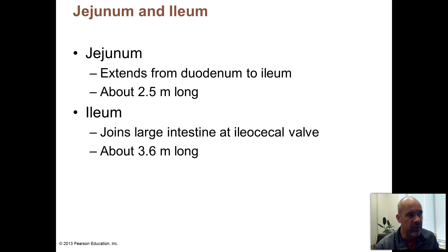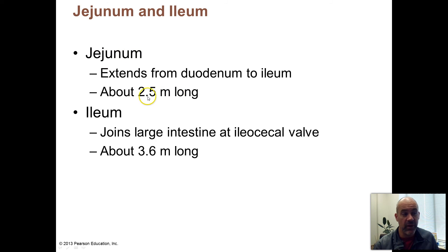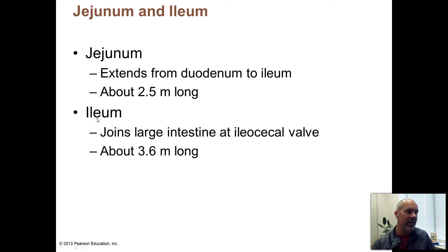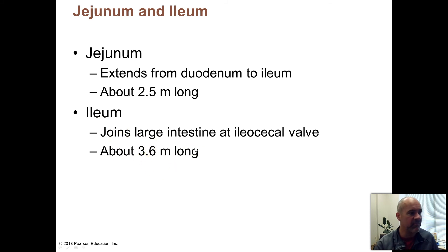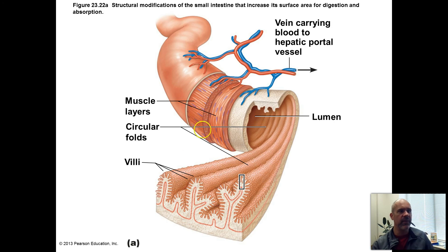Moving on from the duodenum, the next stretch of the small intestine is called the jejunum, which is about 2.5 meters — roughly 8 feet — long. The third stretch is called the ilium, spelled with an E and not an I. Ilium with an I refers to the main portions of your pelvic bones, so keep that spelling difference in mind. The ilium is about 3.6 meters — about 11 feet — long, so it obviously has to be wadded up pretty tightly to fit in there.